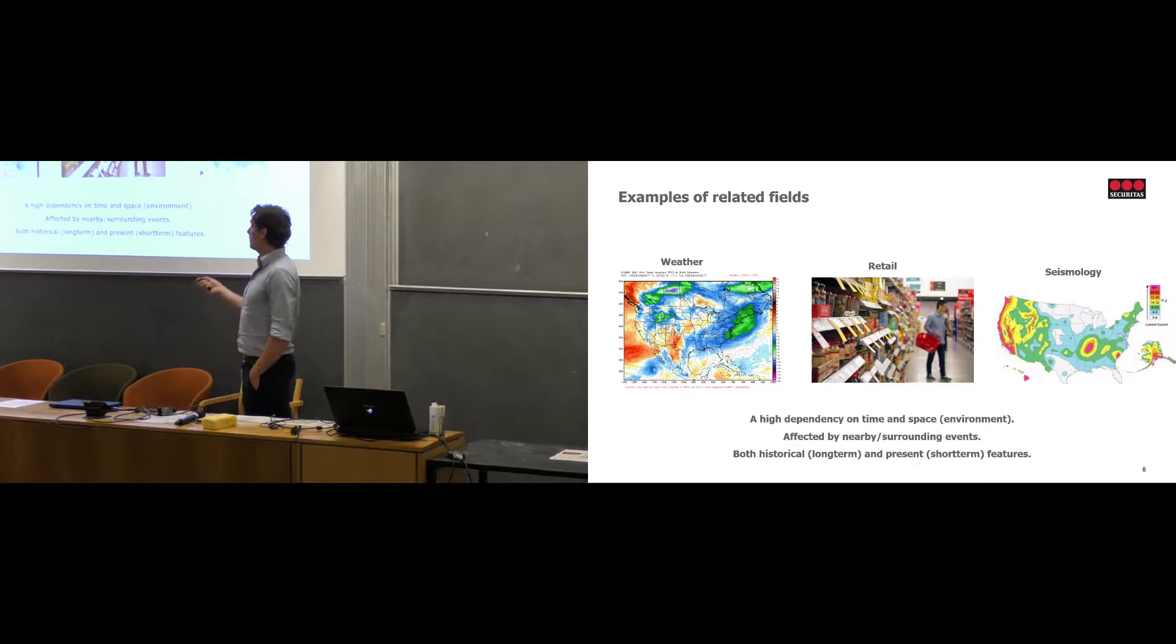But to be a bit more realistic, examples of related fields with crime prediction are more like this. It's about forecasting into the near future. So near future could be weather - you want to see what's going to happen in the next week. What's the risk for crime to actually happen? Retail, they do it a lot, but they do it with sales. They're like, how can we sell more? When are we going to strike? But there's also time series predictions. And seismology is more based on the historical perspective. But that's also what you do when you have data going back. So there's a high dependency on time and space. It's affected by nearby events. And they're both historical, long-term interest and features. This is something they all kind of share.